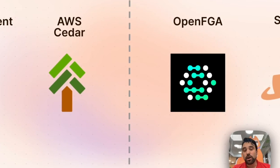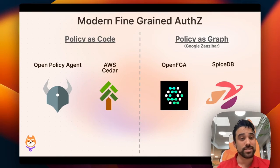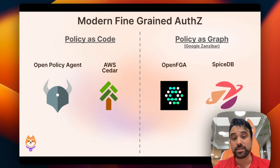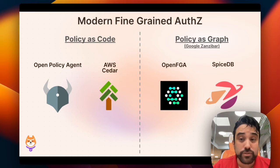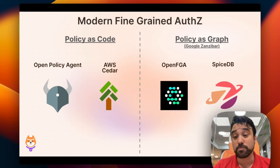Modern fine-grained authorization has two camps: policy as code with policy agents like Open Policy Agent and AWS Cedar, and policy as graph solutions — what's called Google Zanzibar — with leading candidates like OpenFGA and SpiceDB.